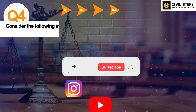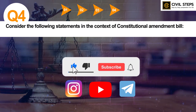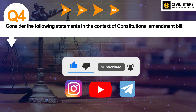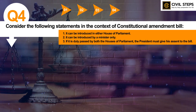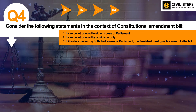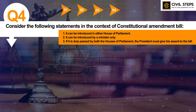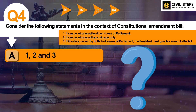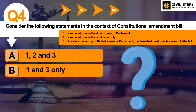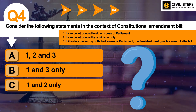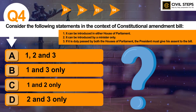Let us discuss question number 4. Consider the following statements in the context of a Constitutional Amendment Bill. 1: It can be introduced in either House of Parliament. 2: It can be introduced by a Minister only. 3: If it is duly passed by both the Houses of Parliament, the President must give his assent to the Bill. Which of the statements given above are correct? Option A: 1, 2 and 3. B: 1 and 3 only. C: 1 and 2 only. D: 2 and 3 only.